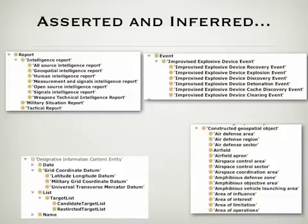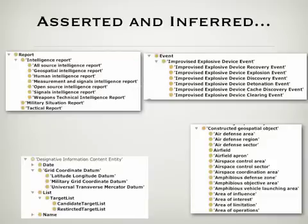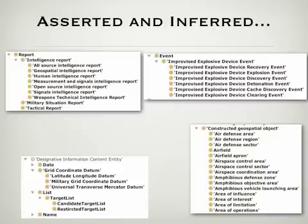Inferred ontologies relate the entities and events in asserted ontologies, so that we can infer, for example, a weapons technical report describes some IED event, or an IED clearing event was located at some area of influence, or a grid coordinate datum designates some constructed geospatial object.